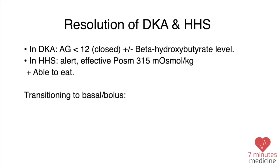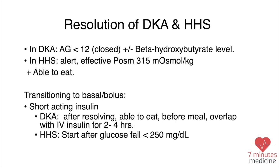When transitioning to a basal-bolus regimen, there are two parts: basal and short-acting. After DKA resolves and the patient is able to eat, overlap the short-acting insulin with IV insulin for at least 2 to 4 hours. For HHS, you can start short-acting insulin when blood glucose is less than 250 mg/dL.